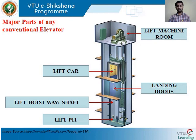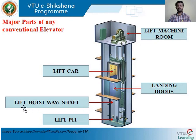Starting from the bottommost part, we have the lift pit. This is the portion that is slightly sunken from the established ground level or basement level. Next is the lift hoistway, also called the lift shaft — this vertical open space is where the elevator car travels up and down to various floor levels.